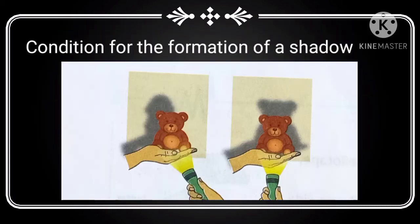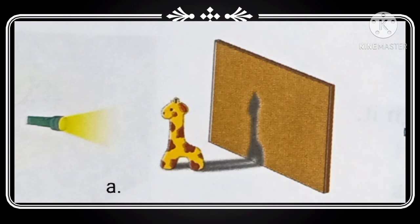Now we discuss the conditions which are required for the formation of shadow. There are three conditions: first, a source of light; second, an opaque object to obstruct the path of light; and third, an opaque screen to obtain the shadow.